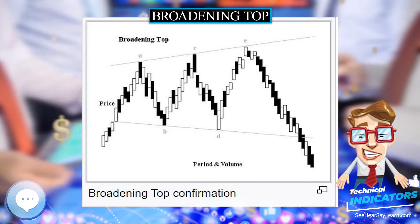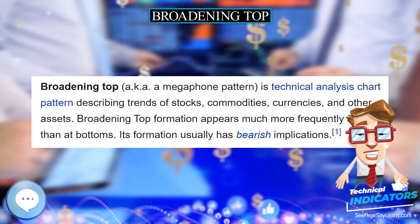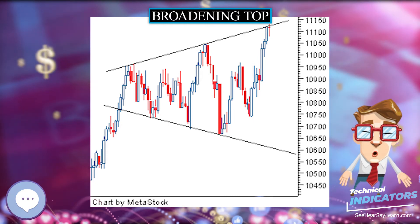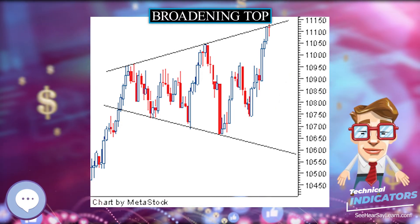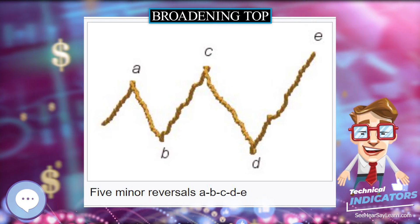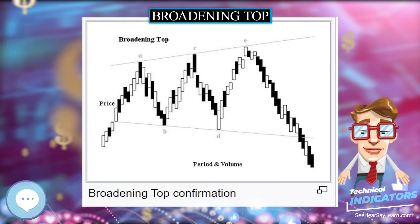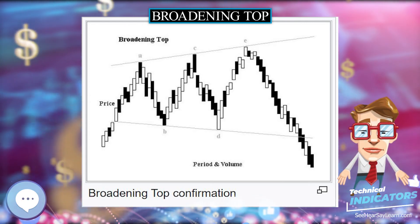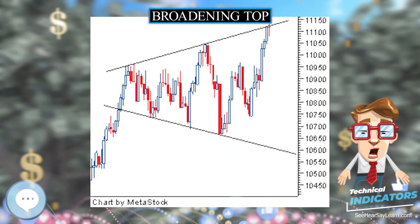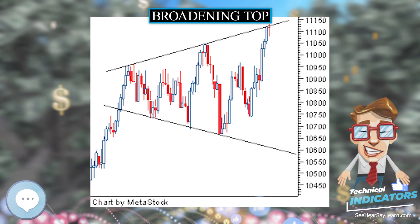In the broadening top formation, five minor reversals are followed by a substantial decline. In the figure above, the price of the share reverses five times — reversal point D is made at a lower point than reversal point B, and reversal points C and D occur excessively higher than reversal point A. One can't be sure of the trend unless price breaks down the lower of the two points, B and D, and keeps on falling. In the figure below, the broadening top is confirmed.